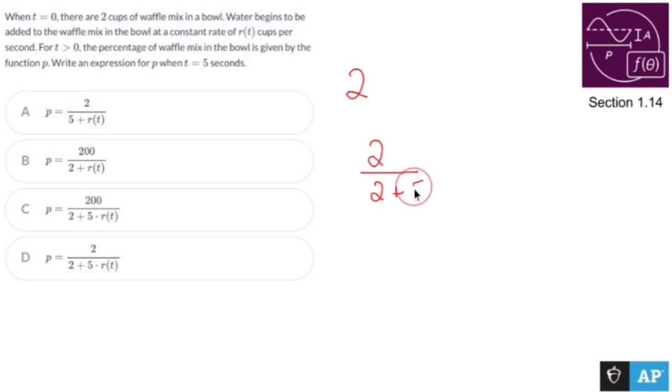So whatever the rate is, like a tenth of a cup per second, I'm going to have two cups of waffle mix. And over here I'm going to have waffle mix plus water. And the way I figured out water, it's going to be five seconds of whatever rate this is.